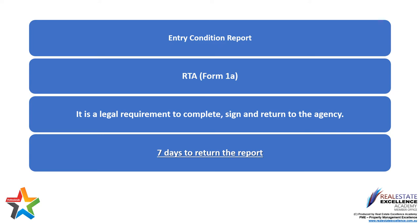The Form 1a is the entry condition report. It is a legal requirement for you to complete, sign, and return the Form 1a to our agency within seven days of taking possession. You are given a copy of this form completed and signed by our agency on or before the day you take possession — usually the day you collect the keys. During your legal time period to complete and return the form, if you have any questions or concerns, please contact our property manager and return the report within the seven days set out in the legislation.